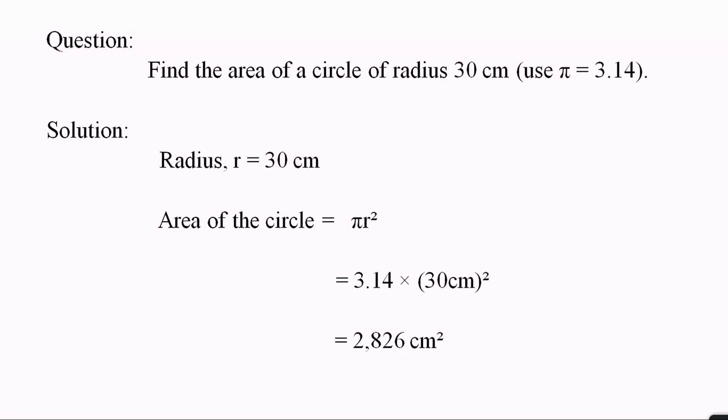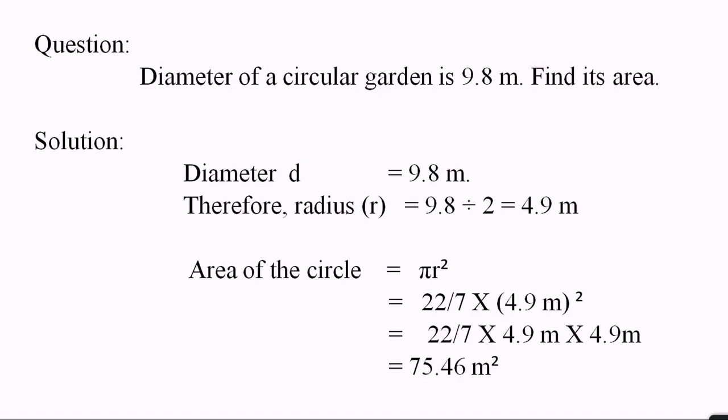Now let's try to solve some problems from our textbook. First question: Find the area of a circle of radius 30 cm. We are given that we have to take pi as 3.14. So when we have to take pi as 3.14, we write area of circle as πr² and we write 3.14 for pi and 30 cm squared. In this way, the area of circle will be 2,826 cm².